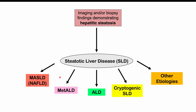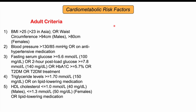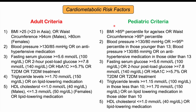What has changed with the new diagnostic criteria is that not only do we need imaging and/or biopsy findings showing hepatic steatosis, but we also need at least one cardiometabolic risk factor. These are split into adult and pediatric criteria, and many overlap with metabolic syndrome: high BMI, high blood pressure or use of an anti-hypertensive, high fasting serum glucose, high A1c, type 2 diabetes, high triglyceride levels, or low HDL cholesterol.